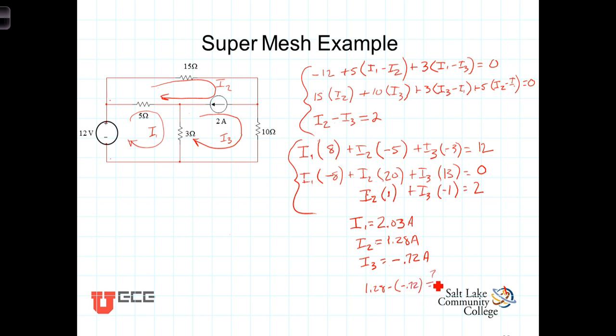The sum of those are supposed to equal 2 amps, and sure enough, that works there. And of course, we could plug those values into any one of those equations and prove that our solutions are correct. But now that we know what I1, I2, and I3 are.